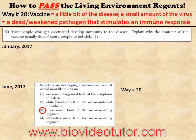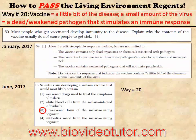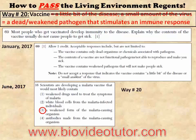On the January 2017 Living Environment Regents, there was a short answer question that also deals with the vaccine. They wanted to know why the contents of the vaccine usually do not cause people to get sick. That's because it's a dead or weakened form of that pathogen. As long as you write something along those lines, you get one point. Notice they say do not accept 'a little bit of the disease' or 'a small amount of the virus.' So that's one point for multiple choice and one point for short answer on two different exams.